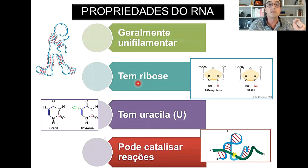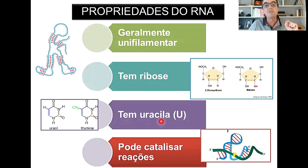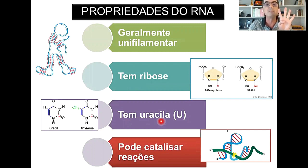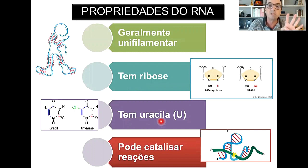O RNA contém como açúcar a ribose e não mais a desoxirribose — por isso, seu nome de ácido ribonucleico. Nas bases nitrogenadas, o DNA continha quatro: adenina, timina, guanina e citosina. No caso do RNA, a timina dá lugar à uracila, uma outra base pirimídica que entra no lugar da timina.